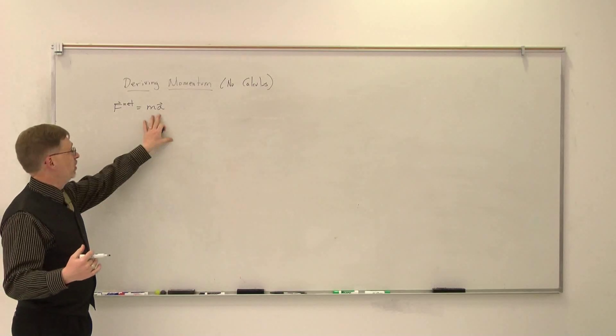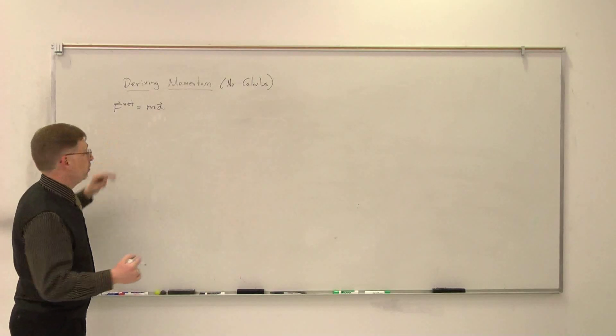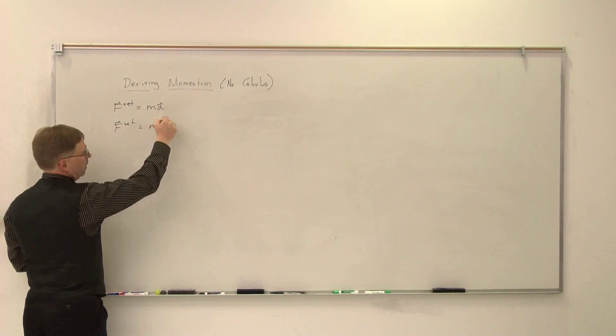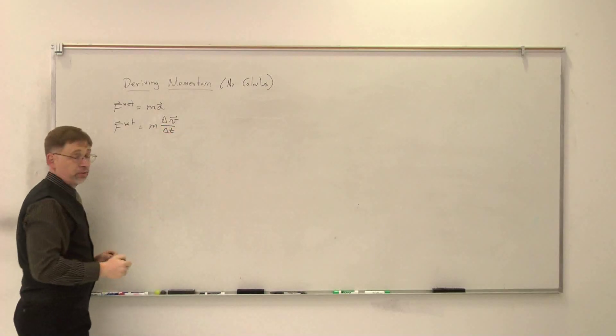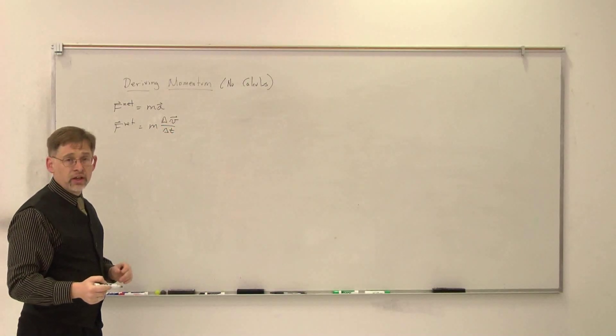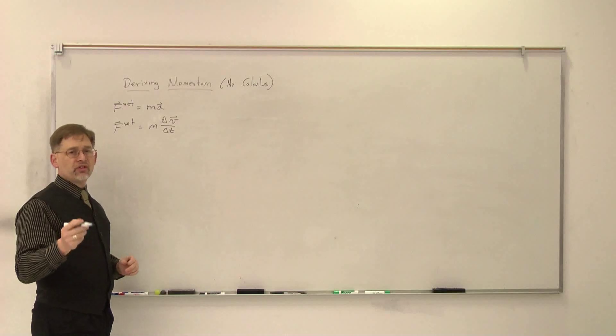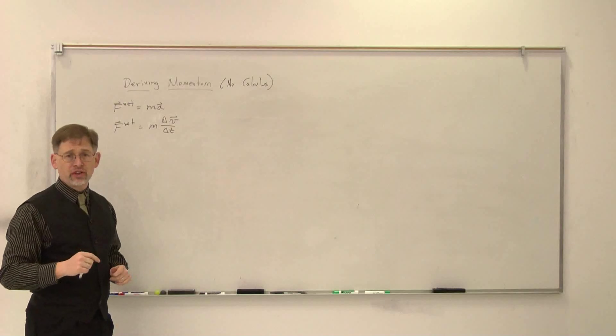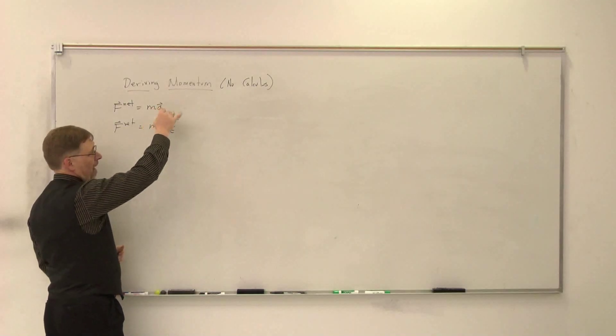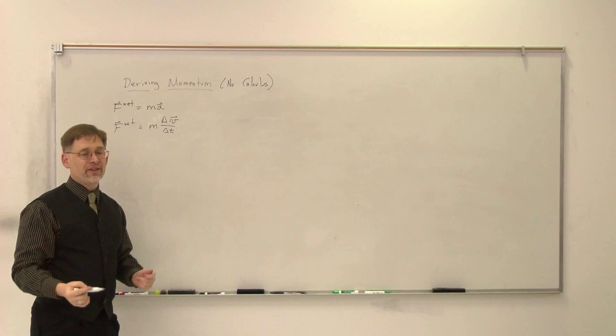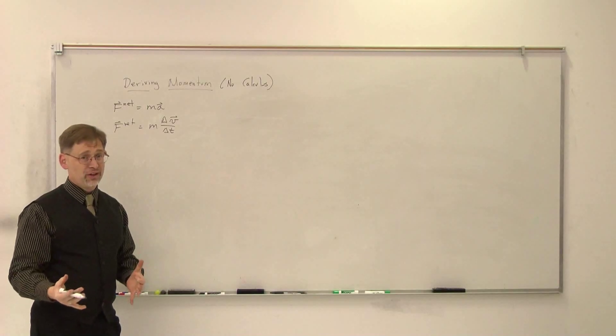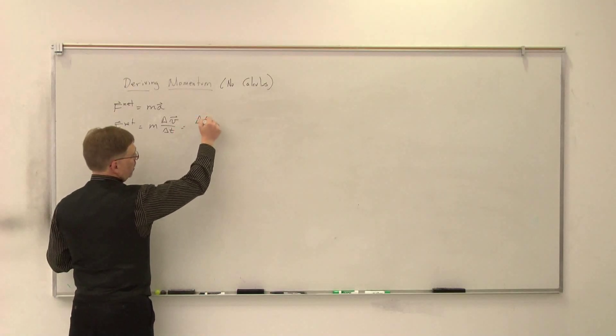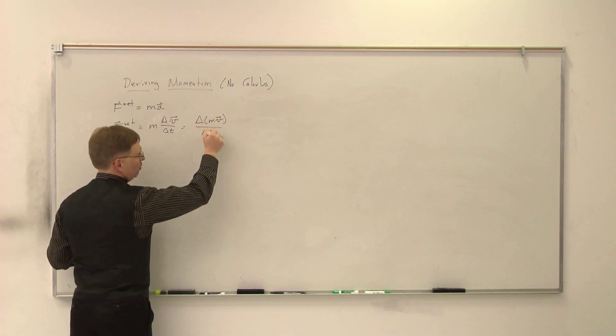Now, what we can do is we can use our definition of acceleration to rewrite this equation. We can say that F_net is equal to M, and we know that the acceleration is the change in velocity with respect to time. Now, for those of you who have a little bit of calculus, one of the things that you know you can do is if you have an expression that's like this, and you know that that mass is constant, you can take the mass in and out of the change in sign. Those of you who don't have the calculus and haven't seen that, you're just going to have to take it out of faith that that's a legal move.